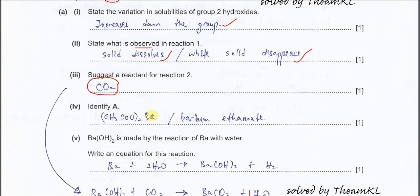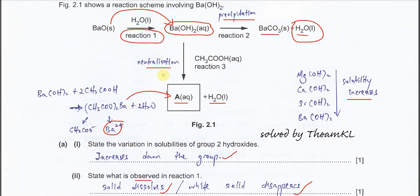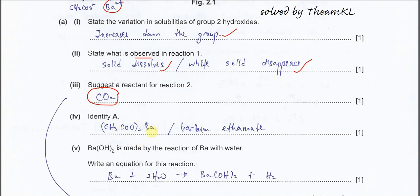Part 4: identify A. A is formed from the neutralization reaction, so it is barium ethanoate. You can give the formula or the name: (CH₃COO)₂Ba, or barium ethanoate.